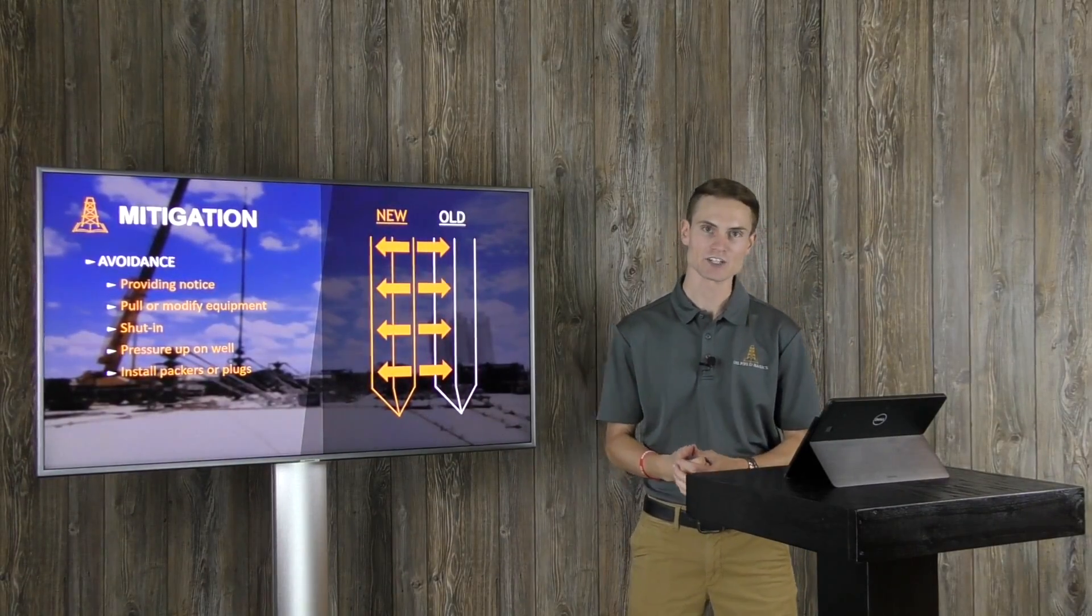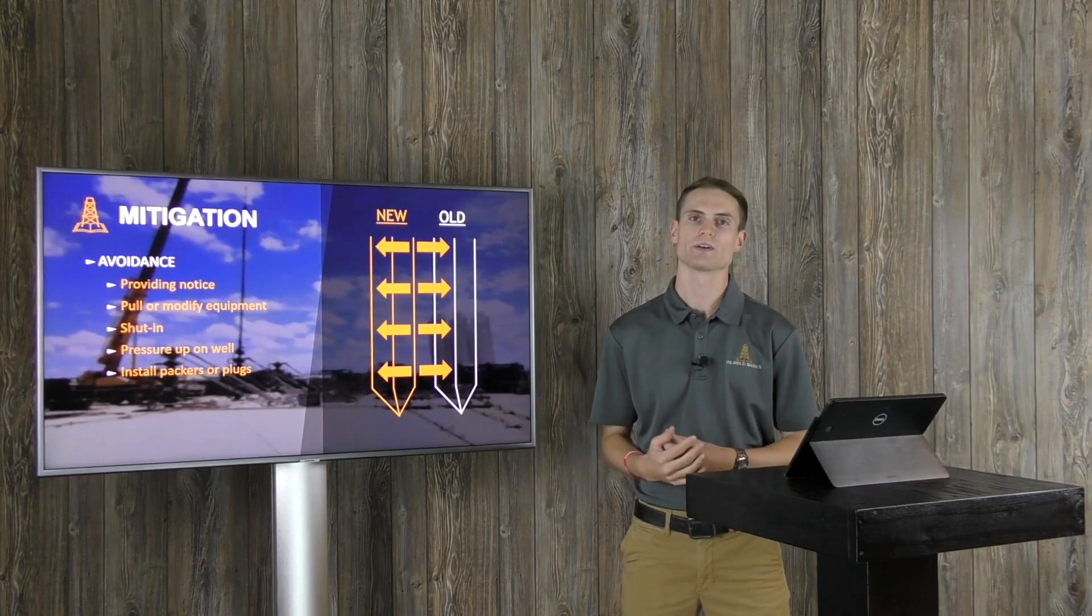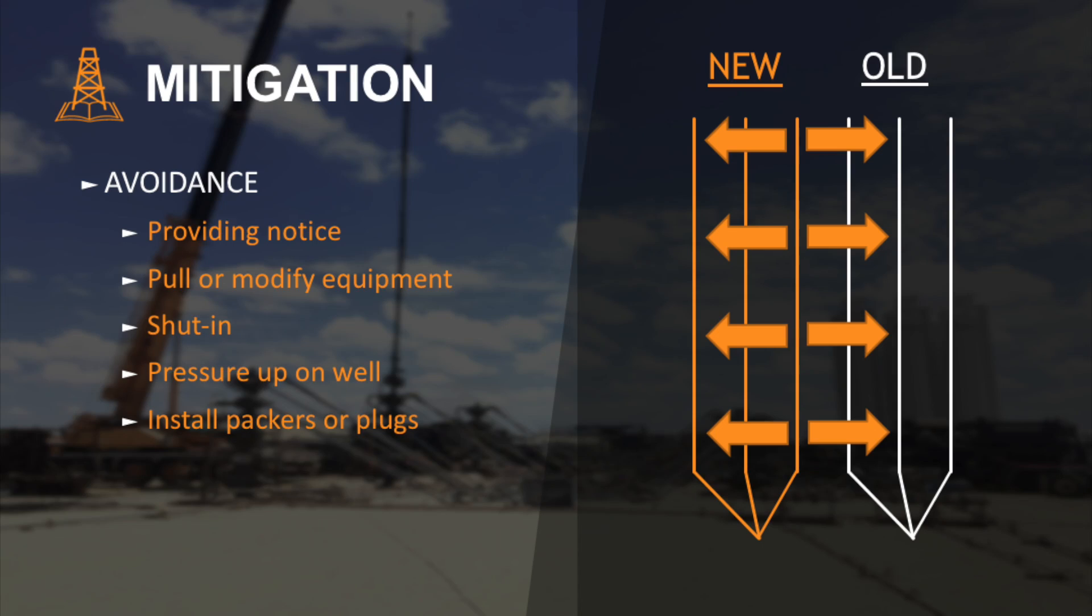All right. So now getting into the mitigation. So now that we know some of the causes and reasoning behind a frack hit, what can we do to mitigate the risks? So first off is slotted avoiding it. So doing everything we can to avoid the risks of a frack hit on the parent well or the offset wells.